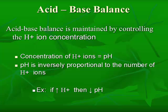When we look at acid-base balance, it's maintained by controlling the hydrogen ion concentration. The concentration of hydrogen ions is equal to what the body's pH is, and pH is inversely proportional to the number of hydrogen ions, so if you have an increase in hydrogen ions, then you will have a decrease in pH. The concentration of hydrogen ions in body fluids has the narrowest range of normal and is very tightly regulated by the body. Relatively small changes in the pH for short periods of time can disrupt major life-sustaining physiologic processes.